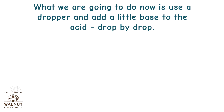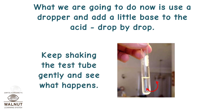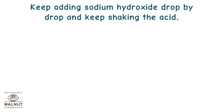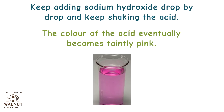What we are going to do now is use a dropper and add a little base to the acid drop by drop. Keep shaking the test tube gently and see what happens. Keep adding sodium hydroxide drop by drop and keep shaking the acid. The color of the acid eventually becomes faintly pink.